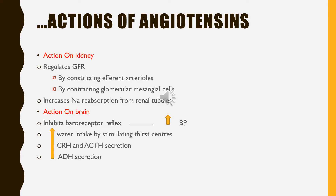The central action of angiotensin 2, that is its action on the brain: it inhibits the baroreceptor reflex, which is responsible for reducing BP. So, inhibition of the baroreceptor reflex indirectly helps in increasing BP. Angiotensin 2 also increases water intake by stimulating thirst centers, increases the secretion of corticotropin releasing hormone from the hypothalamus and adrenocorticotropic hormone from the pituitary, and increases the secretion of anti-diuretic hormone from the hypothalamus.